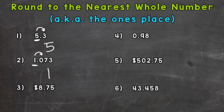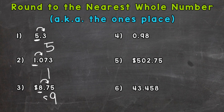Number three. I put a dollar sign there because it's very common to round to the nearest dollar, which is the same as rounding to the nearest whole number or the ones place. Let's round to the nearest dollar here and underline the ones place. We're asking ourselves: is eight dollars and seventy-five cents closer to eight dollars or nine? Let's look next door. Five or more raise the score; four or less let it rest. Well, seven is five or more, so we are going to round up to nine dollars.